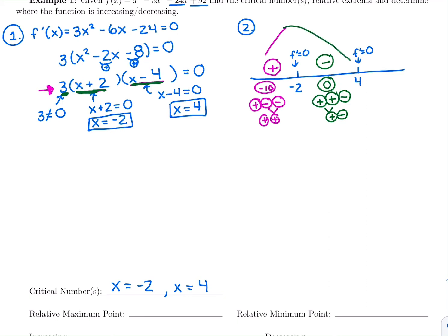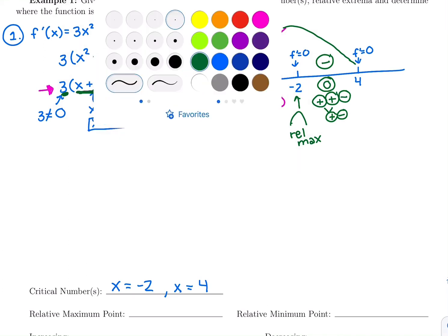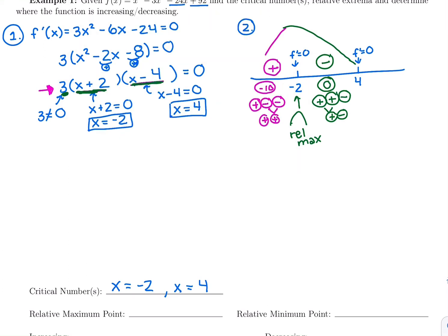So I switch from increasing to decreasing at this first critical number — x equals negative 2. Going from increasing to decreasing means there's a relative max there. We're making progress. We'll finish the sign chart and then write a full conclusion.